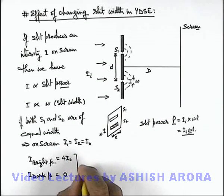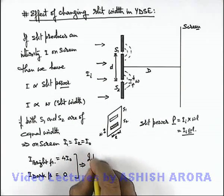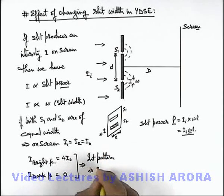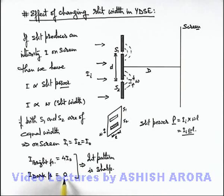Now this implies that the interference pattern is sharp, because if zero intensity fringes are there, we can clearly distinguish bright fringes and dark fringes between them.